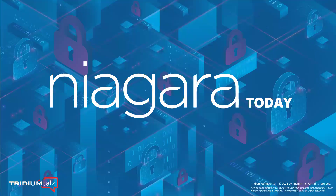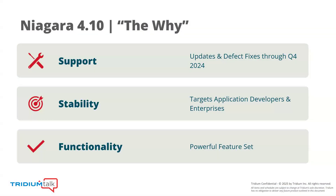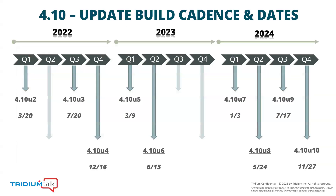Niagara 4.10 is currently our LTS — our long-term supported version — which is great for enterprise clients that need to be on a stable and supported version for many years, while we come out with new feature releases every 9 to 12 months. The latest update was at the end of last year at 4.10 U10. With the release of Niagara 4.15, the next long-term supported release, 4.10 is going out of support. So if you have customers stabilizing on Niagara 4.10, it's time to start planning to migrate up to 4.15.